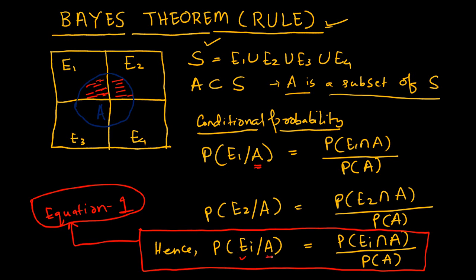That is the conditional probability of EI happening given A. So A is an event — it is given that event A is happening. Now, what is the probability that EI, whether E1, E2, E3 or E4, is happening? Probability is always related to some sort of an event. So probability of EI given A is equal to probability of EI intersection A upon probability of A. We generalize from the previous two equations. We are calling it equation 1.